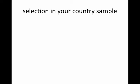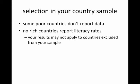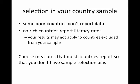Is there going to be selection in your country sample? Some poor countries don't report data, some tiny countries don't report data. For example, no rich countries report literacy rates. So your results may not apply to countries excluded from your sample. You want to choose measures that most countries report so you don't have sample selection bias. Part of what you'll do this week in lab is look at countries with missing data and ask: are they mostly from Africa? If so, your analysis sample won't apply to Africa.